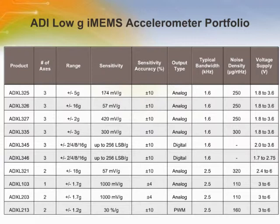ADI's MEMS-based accelerometer portfolio is available in 1, 2, and 3-axis configurations with analog or digital output, up to 16g sensing range. These accelerometers can detect and measure acceleration, tilt, shock, and vibration, enabling a wide range of market-differentiating industrial, medical, communications, consumer, and automotive applications. These devices also address high performance, low power, integrated functionality, and small size requirements in countless applications.